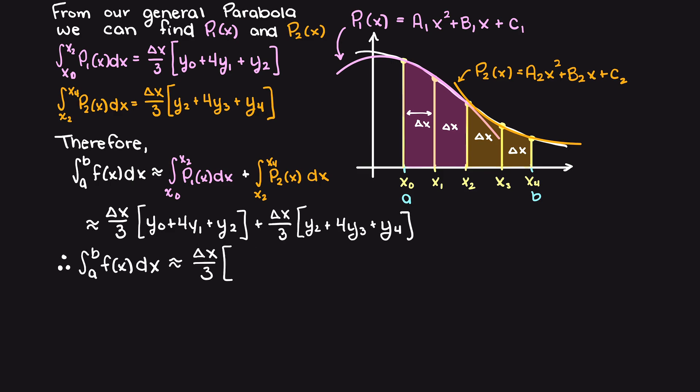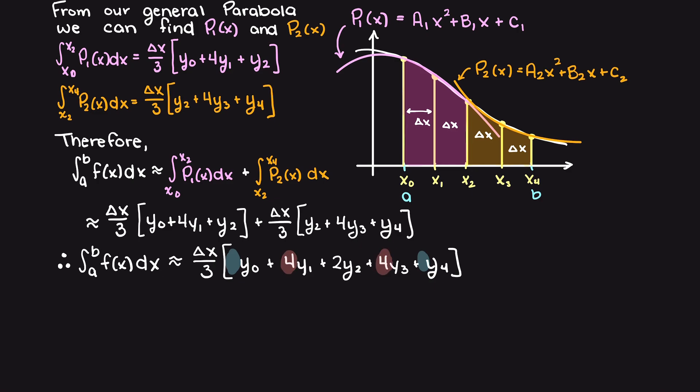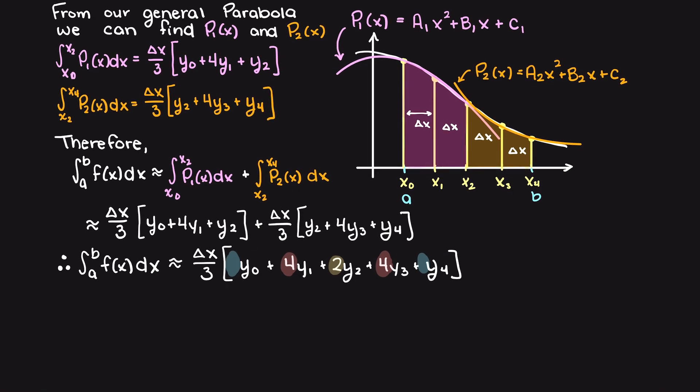Doing this and simplifying, we get the following results. Note the trend here as this is a reoccurring Simpson's one-third rule. Our first and last term have a 1 coefficient, and all internal data points have an alternating 4 and 2 pattern.